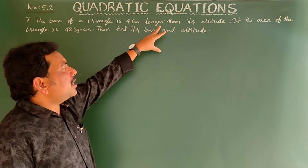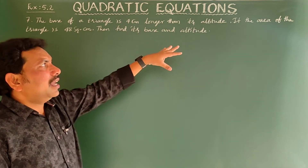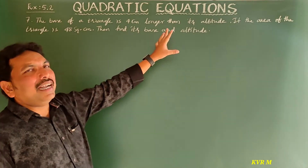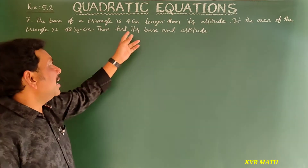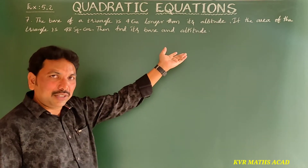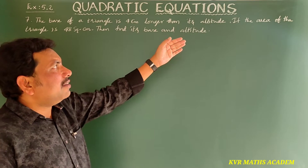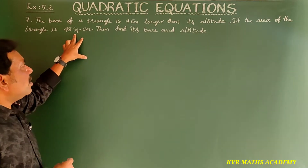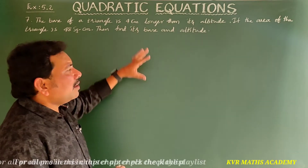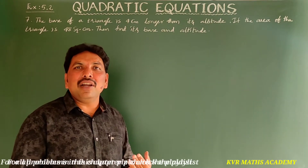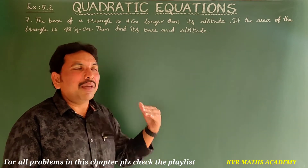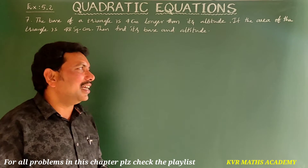The seventh problem: the base of a triangle is 4 centimeters longer than its altitude. If the area of the triangle is 48 square centimeters, find the base and altitude. From this data, we'll first write the quadratic equation and then find the base and altitude.